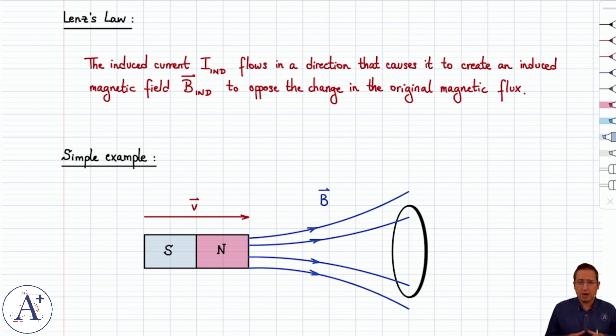What we're going to do now is introduce two laws: Lenz's law and Faraday's law. It turns out that Lenz's law is not associated with an equation. It's just a statement that gives us the direction of the induced current, I_induced. It tells us that the induced current flows in a direction that causes it to create an induced magnetic field B_induced to oppose the change in the original magnetic flux.